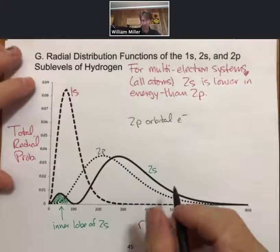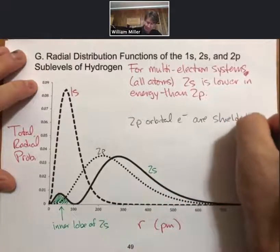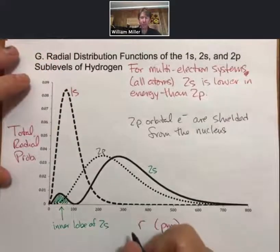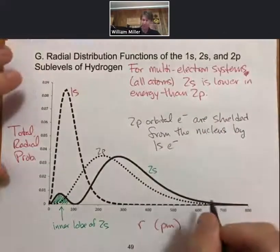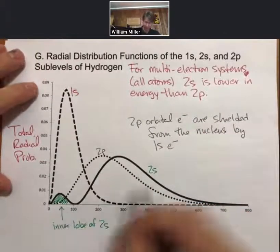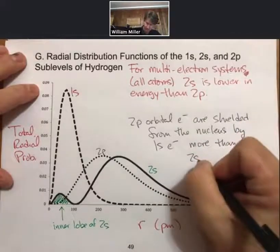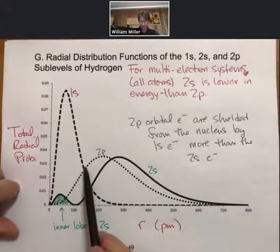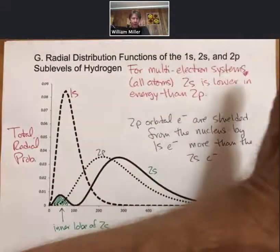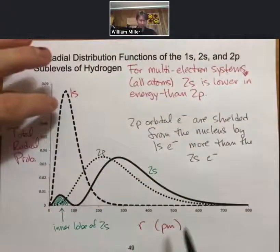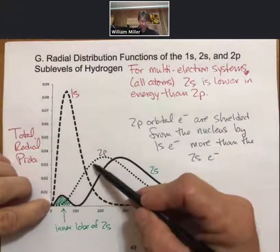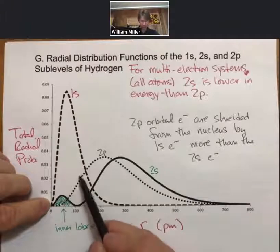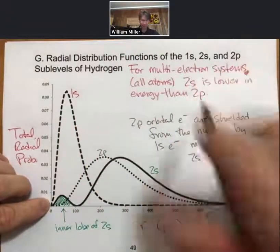And the way we typically put that is the 2p orbital electrons are shielded from the nucleus by the 1s electrons more than the 2s electrons. And that's because more of the 2p is farther outside of 1s. That's what the shielding is. So it's like the nucleus is over here, the 2p electrons on average the same distance from the nucleus, but because they don't have this inner lobe, they are shielded more by the 1s electrons.